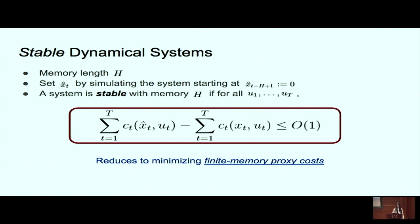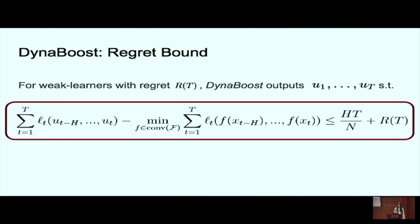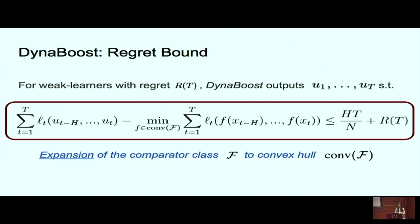This reduces the problem to minimizing finite-memory proxy costs. With that assumption, we construct those proxy cost functions and optimize within the online boosting method based on Frank-Wolfe, which we call DynaBoost. The guarantee we get is: if weak learners have regret bound R(T), then DynaBoost outputs actions U1 to UT with regret R(T) plus an additional term. The key achievement is that we've expanded the comparator class from F to the convex hull of that class. For example, if the comparator class was a set of neural networks, we can now compete with their convex hull — a much stronger class.